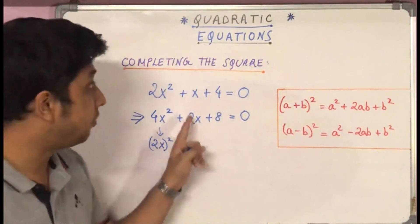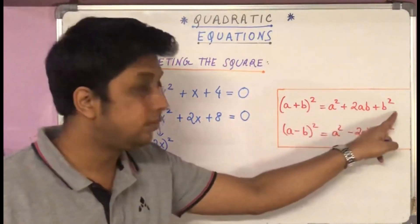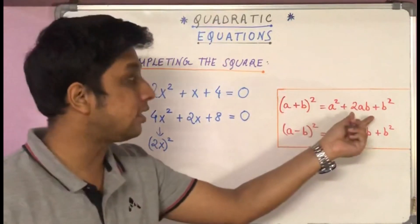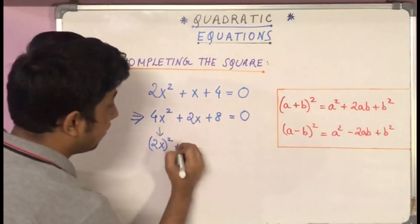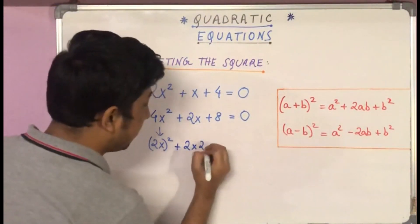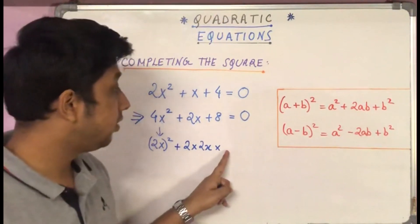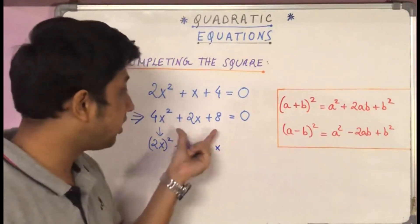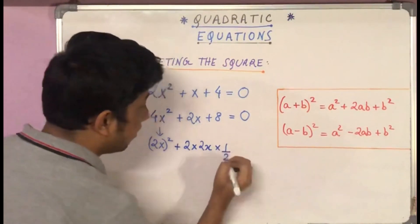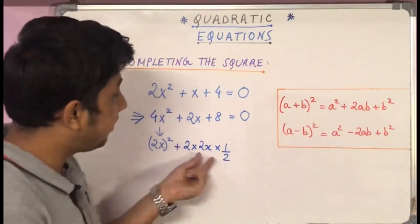After expressing 4x² = (2x)², we proceed with completing the square. We express the middle term 2x in the form 2ab, where a = 2x. So 2x = 2 × 2x × b. Since 2 × 2x already gives 4x, we need b = 1/2 so that 2 × 2x × (1/2) = 2x. So 2ab = 2 × 2x × (1/2), and b = 1/2.